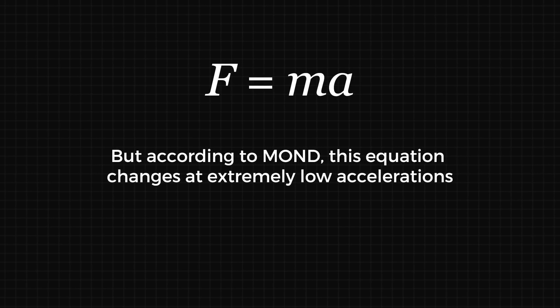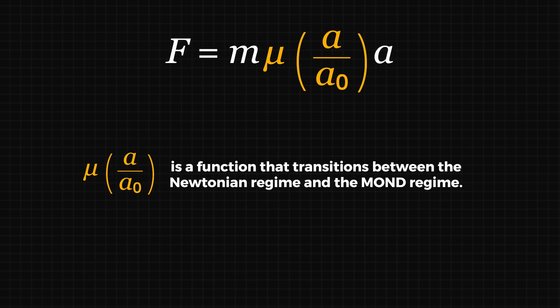MOND modifies this equation when the acceleration is extremely low. It introduces a small acceleration constant a-naught, below which the traditional Newtonian mechanics no longer apply. This acceleration is incredibly small, and according to MOND, the relationship between force f and acceleration a changes through a mathematical function that smoothly transitions from the Newtonian regime to the MOND regime.